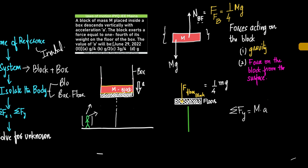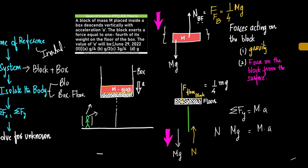What is sigma Fy? The net direction of motion is vertically downwards — it is descending. So all forces acting downwards are taken as positive, and all forces acting upwards are taken as negative. We have weight Mg acting downwards (positive) and normal reaction N acting upwards (negative). Therefore: Mg − N = MA.